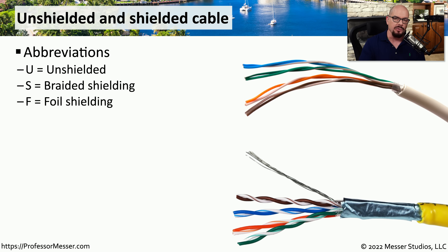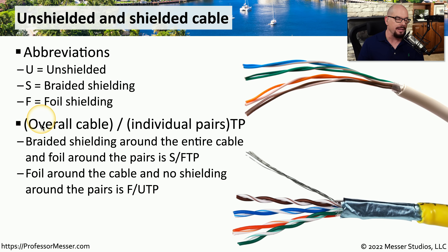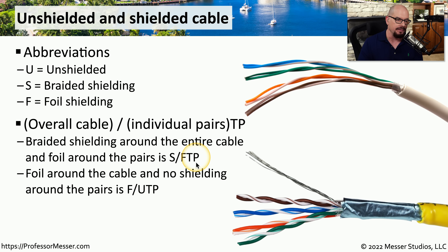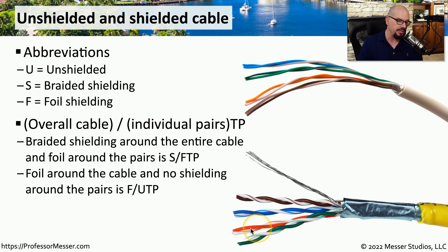Looking at the outside of an ethernet cable, you'll see writing describing what's inside. This uses abbreviations: U for unshielded, S for braided shielding, and F for foil shielding — written as a letter, a slash, another letter, then TP for twisted pair. If there's braided shielding around the entire cable and foil around the pairs, that's S/FTP. If there's foil around the entire cable but nothing around the individual pairs, that's F/UTP. In the shielded twisted pair example shown, with a shield around the entire cable but no shielding around the pairs, that cable is F/UTP.